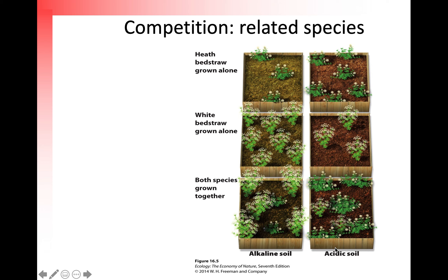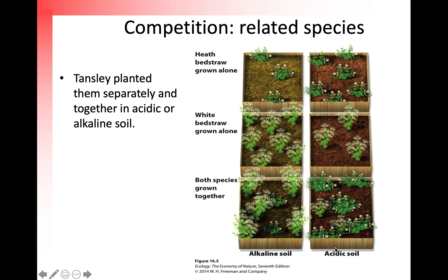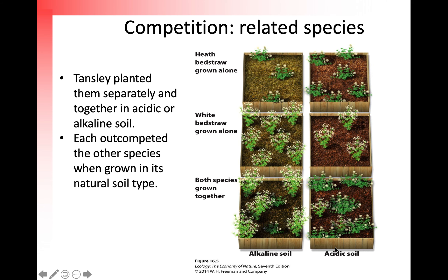Here's a picture of their experimental setup. When grown alone, each species could survive in both environments. However, when grown together, only heath bedstraw survived in the acidic soil, and white bedstraw survived in the alkaline soils. Tansley's experiments were the first to examine interspecific competition between different species — he planted them separately and together in either alkaline or acidic soil, and each out-competed the other species when grown in its natural soil type.